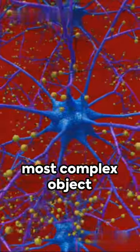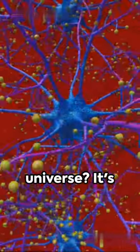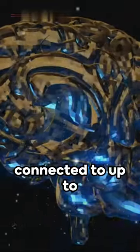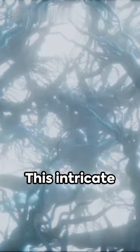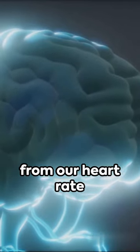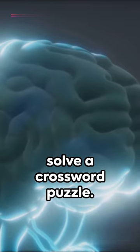Did you know the human brain is the most complex object in the known universe? It's composed of over 86 billion neurons, each connected to up to 10,000 others. This intricate network controls everything we do, from our heart rate to our ability to solve a crossword puzzle.